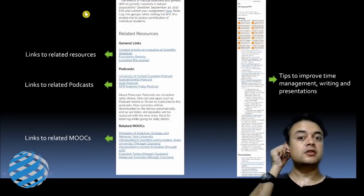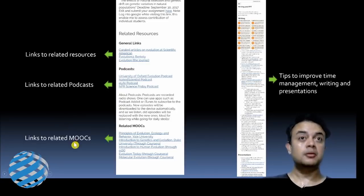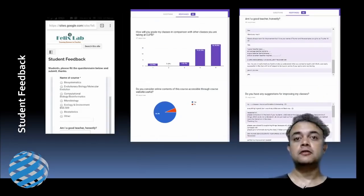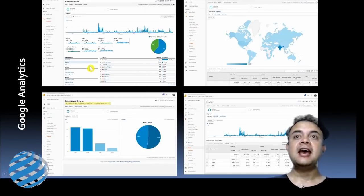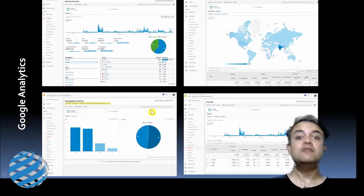Whatever related resources you'd like to link — podcasts, other MOOCs, writing guides, time management resources — you can add those to the website for the benefit of students. Student feedback can also be incorporated using Google Forms. Google Analytics provides an excellent way to analyze your site — you can see gender breakdown, time spent on site, page visits over time, and the geographic location of visitors. Enabling it is just one click.